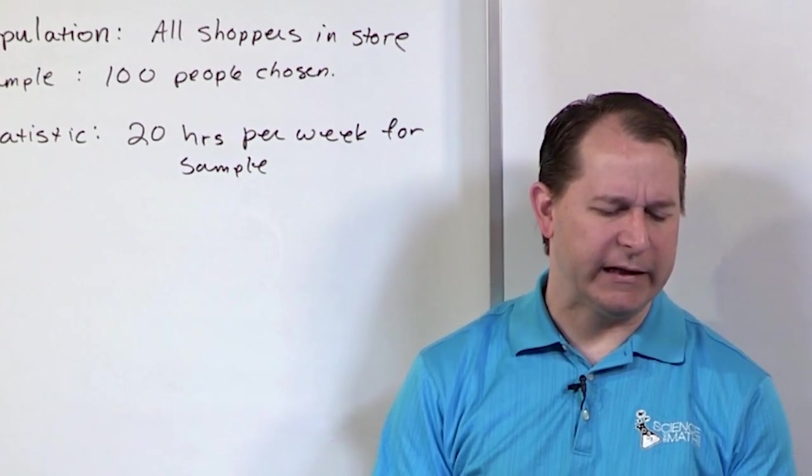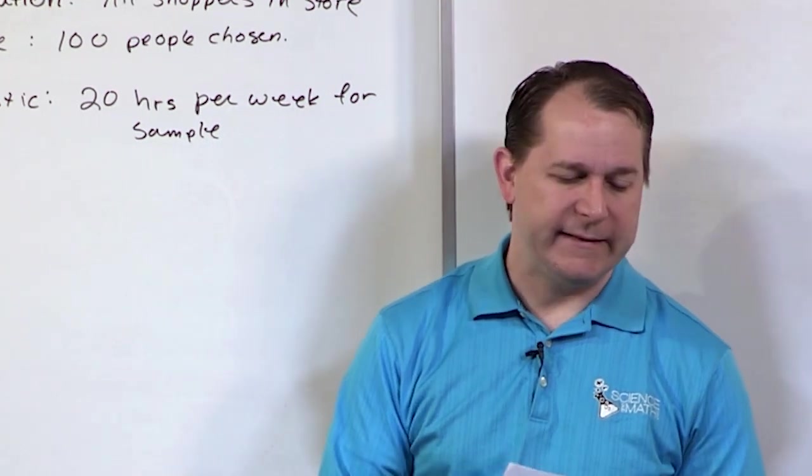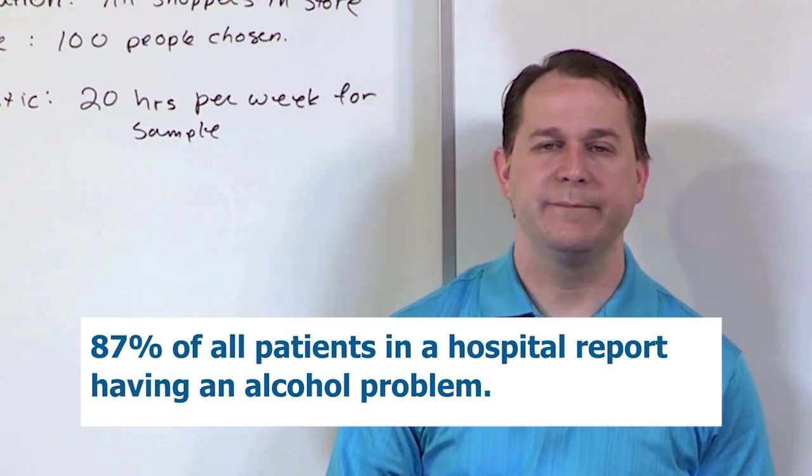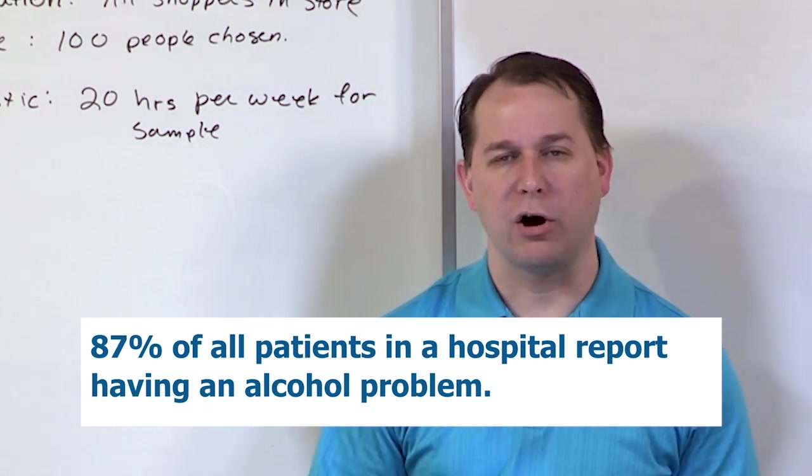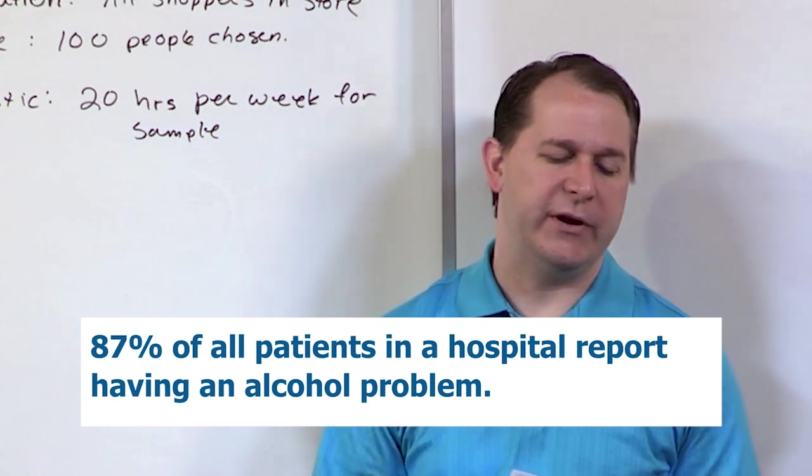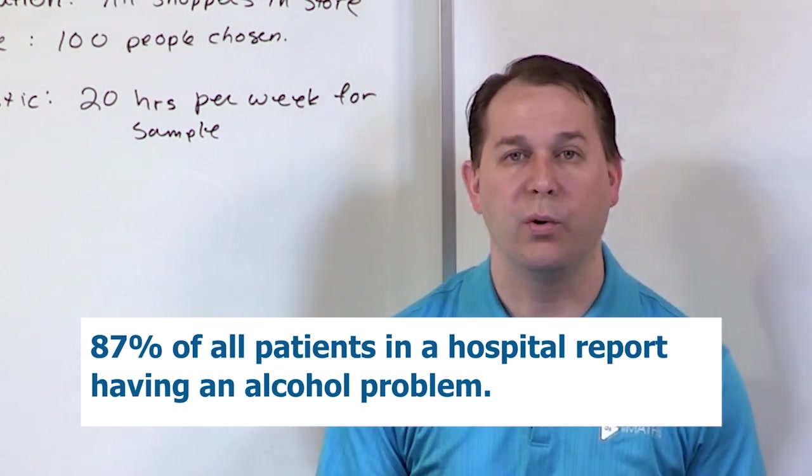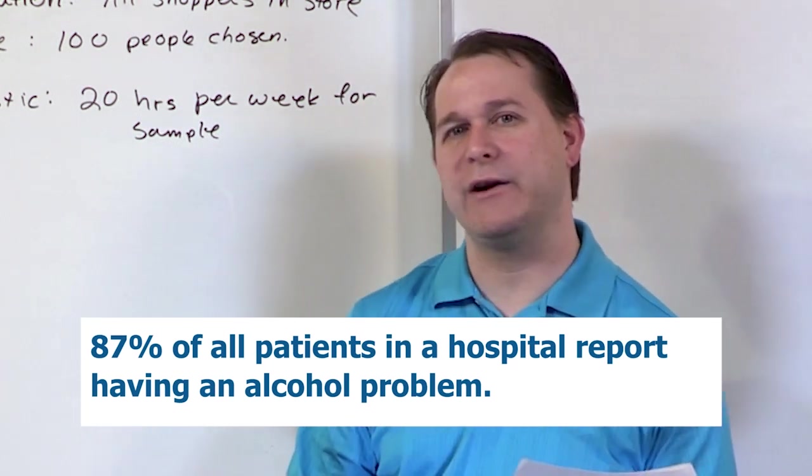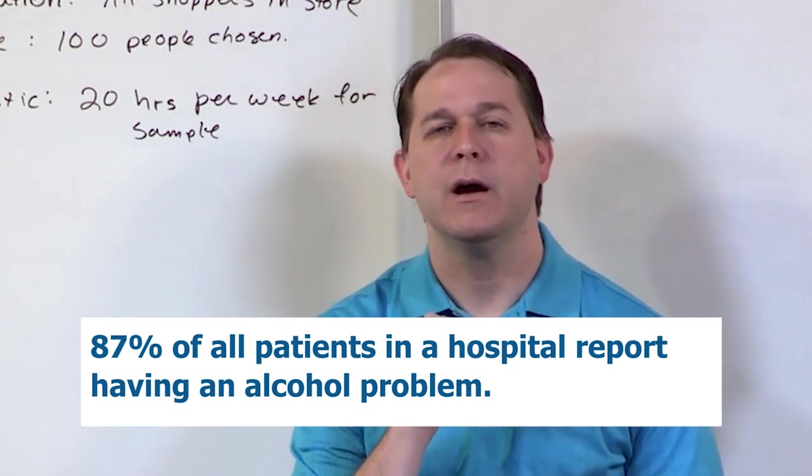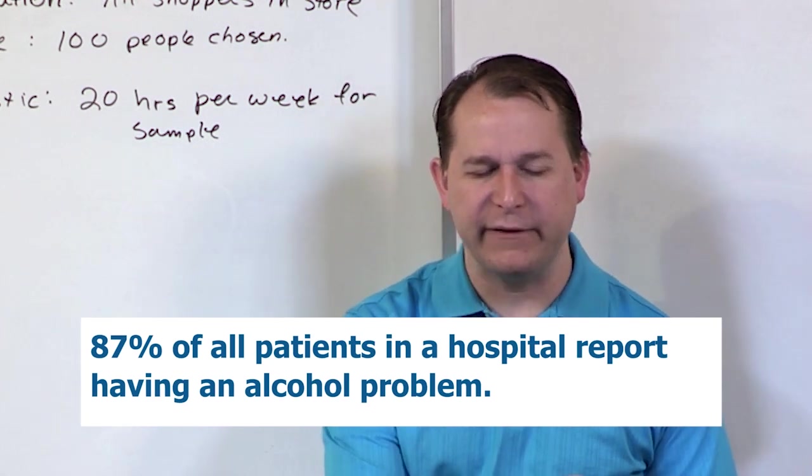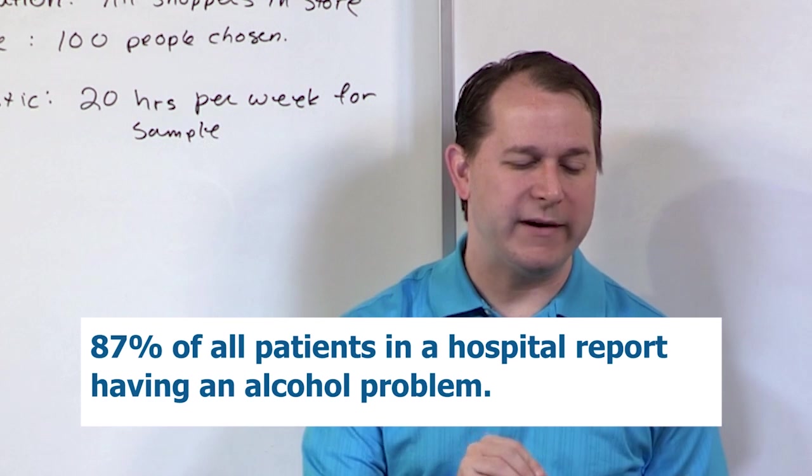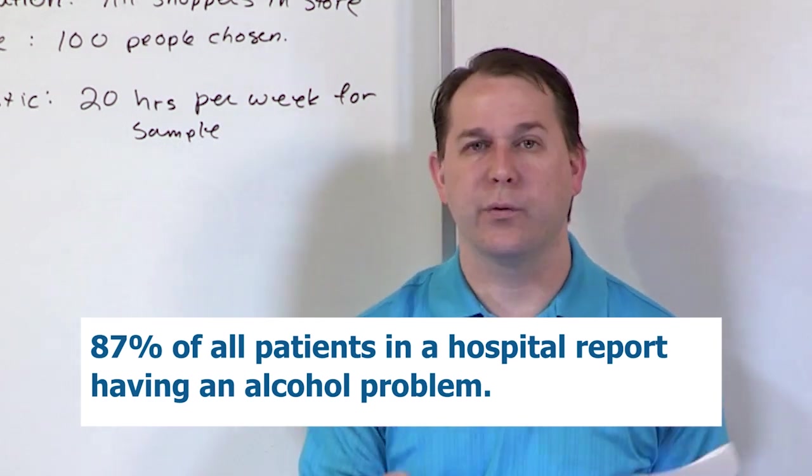So the last one of these we're going to do just to get a little bit of practice. It says that 87% of all patients in a hospital report having an alcohol problem. Now, there's a little bit of interpretation here depending on how you look at it, but what do you think? Is this a parameter? Is this data here, the 87%, is it a parameter of some population, or is it a statistic for some sample?